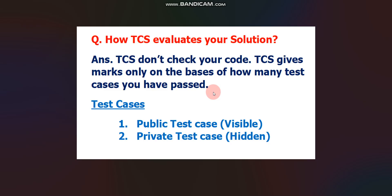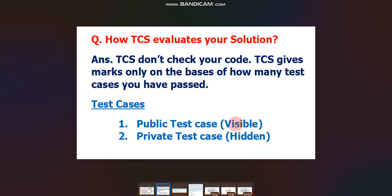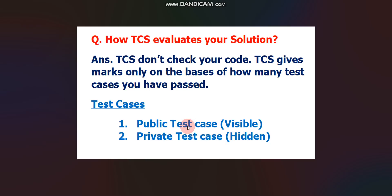There are two types of test cases. First are public test cases — these are visible, you can see them. Second are private test cases. Using this trick, you can pass all the public test cases, but you can't pass private test cases. However, to clear the TCS coding cutoff, you only need to pass the public test cases — that's enough. You don't need to score 100% marks.